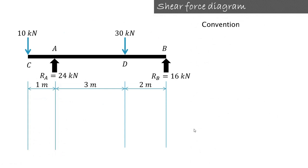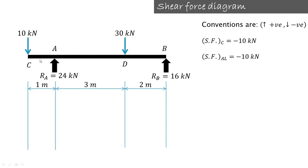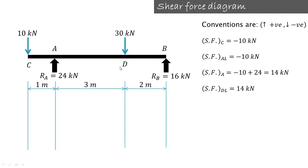Now we will start with the shear force diagram. The convention used is upward forces positive and downward forces negative. Starting at point C, there is a downward force of 10 kilonewton, so shear force at C is minus 10. Just to the left of A it remains minus 10, as no other force acts between C and A. Exactly at A there is an upward force of 24, so minus 10 plus 24 equals 14 kilonewton. This 14 kilonewton remains the same up to just left of D. Exactly at D there is a downward force of 30 kilonewton, so 14 minus 30 equals minus 16 kilonewton.